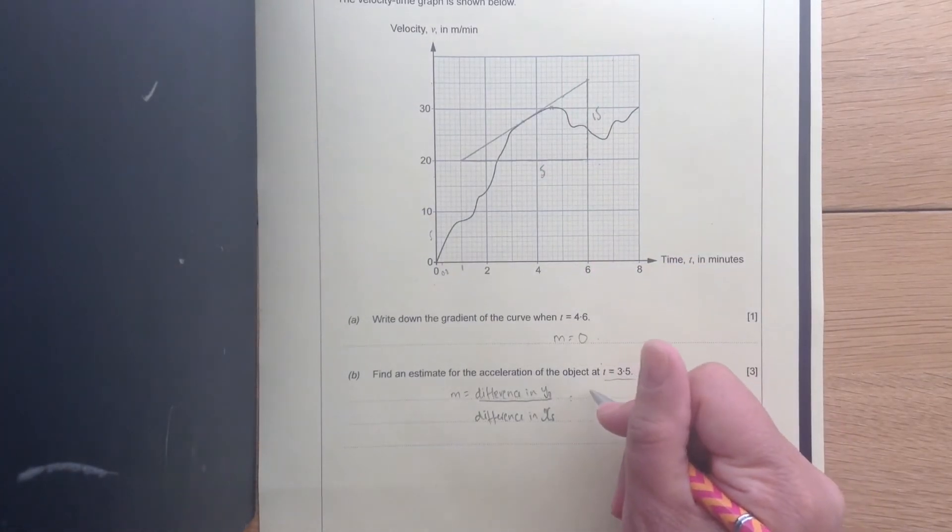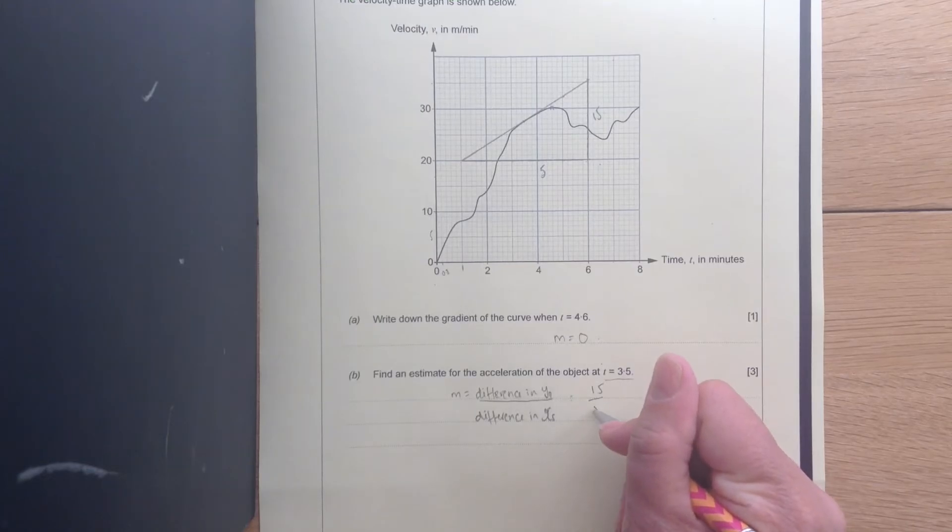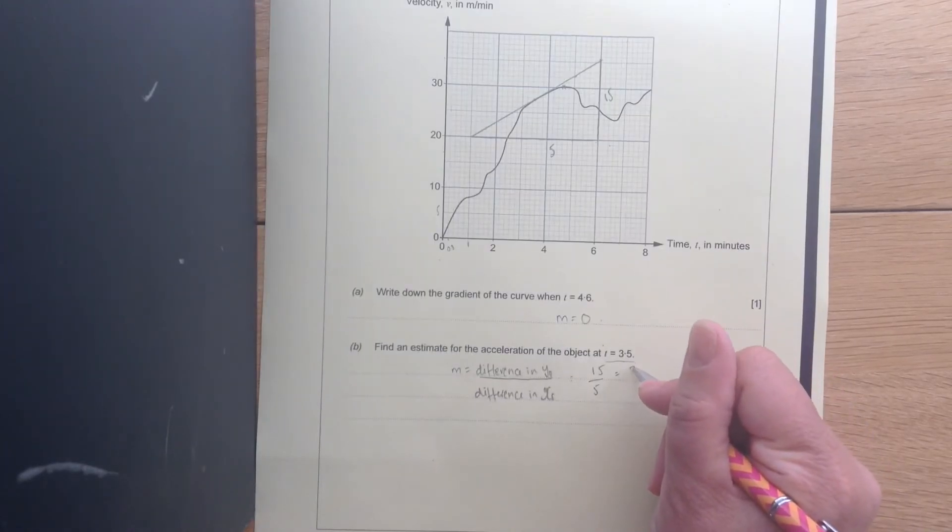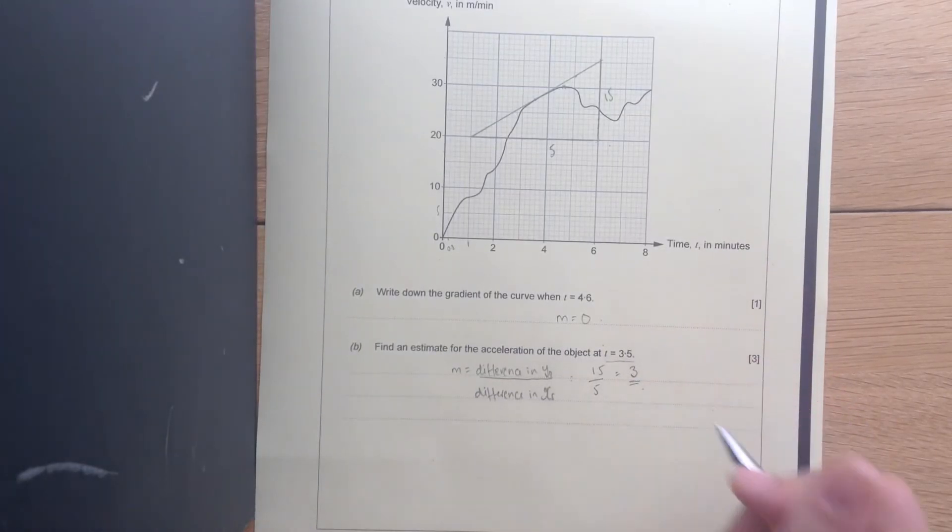And then going across is 5. So we're going to do 15 divided by 5. And that gives us 3.